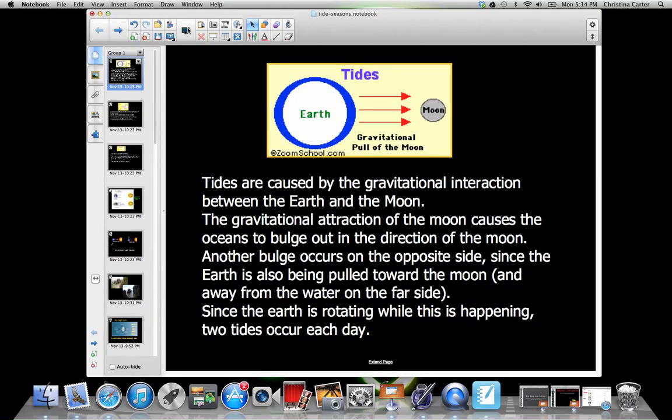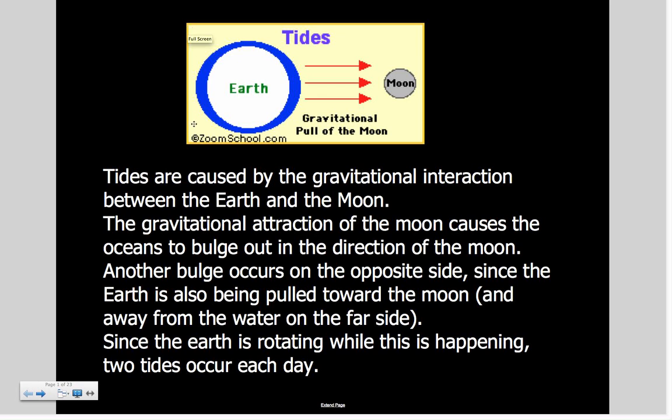Alright friends, let's talk about tides and seasons. If you look at the picture at the top, this is the basic core of how tides work. Tides are caused by the gravitational pull between the Earth and the Moon. Because the Earth has water, the Moon tends to pull some of the water outwards, making this bulge in the circle here—a protrusion or bump.